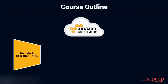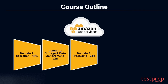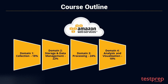Course outline: Domain 1, Collection, which comprises 18% weightage in the exam. Domain 2, Storage and Data Management, which comprises 22% weightage in the exam. Domain 3, Processing, which comprises 24% weightage in the exam. Domain 4, Analysis and Visualization, which comprises 18% weightage in the exam.